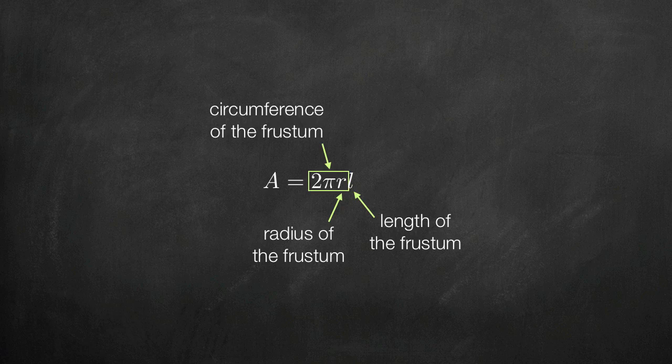Since l is the length of the frustum and nothing more than the arc length of the function that we rotated around the axis, we can replace l in this formula with the arc length formula we found before.